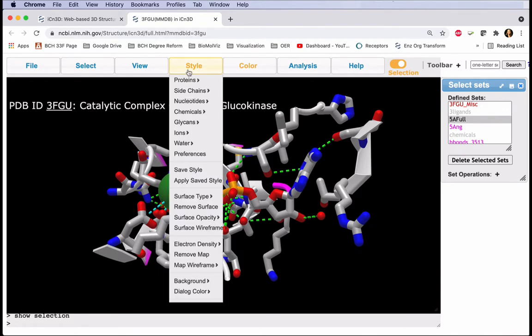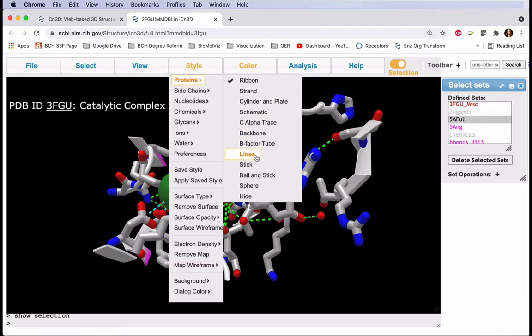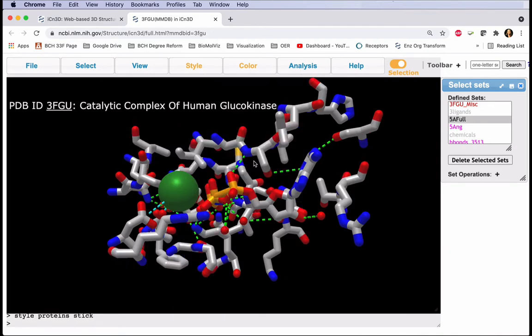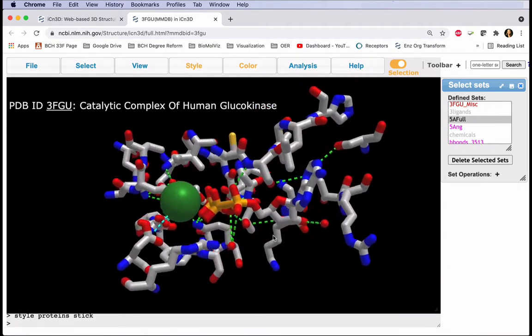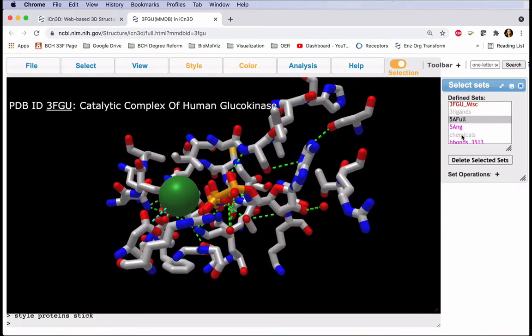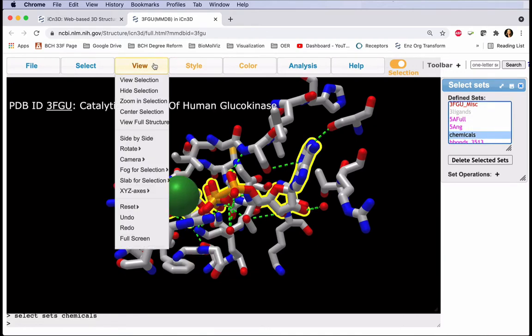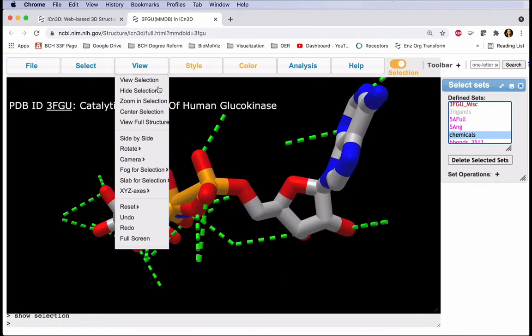So in the Style menu, Proteins, Select Stick. It's a bit challenging to differentiate our ligands from the protein because everything is colored the same. So in our Select Sets menu, we'll click on Chemicals and view that selection.